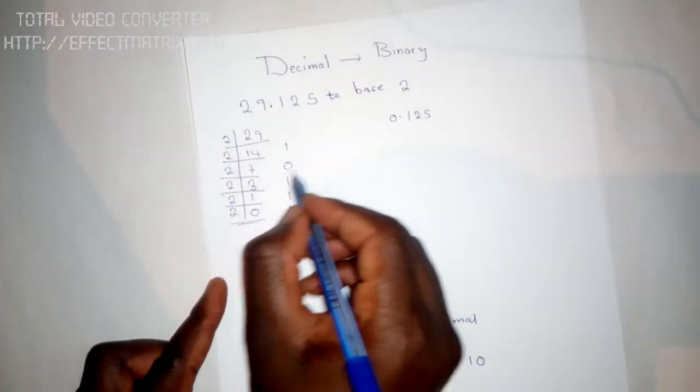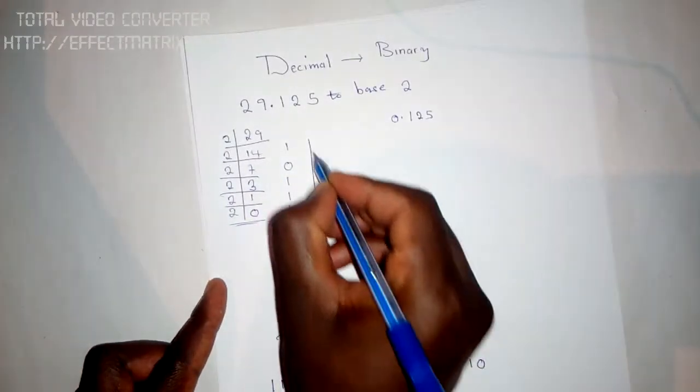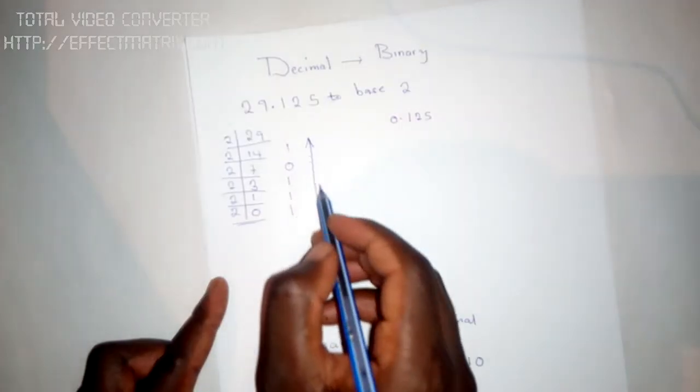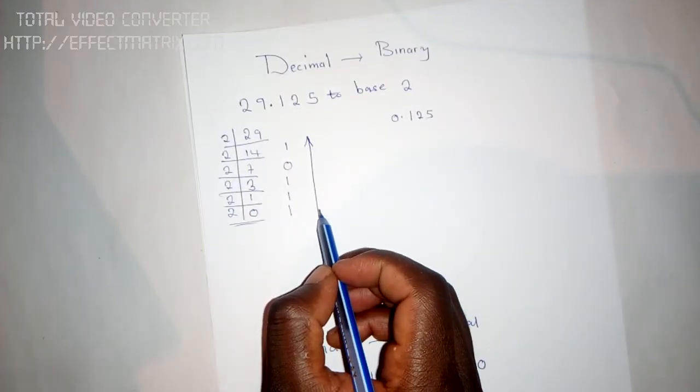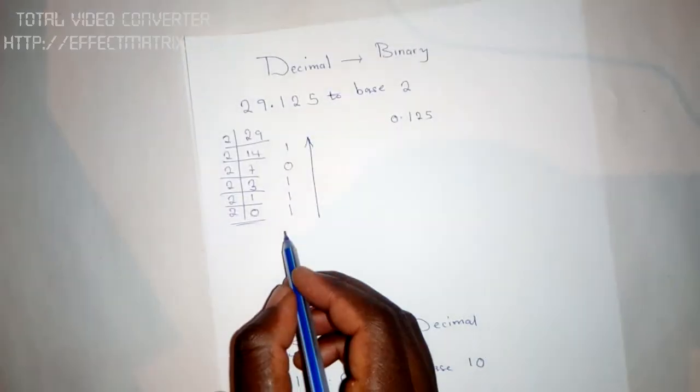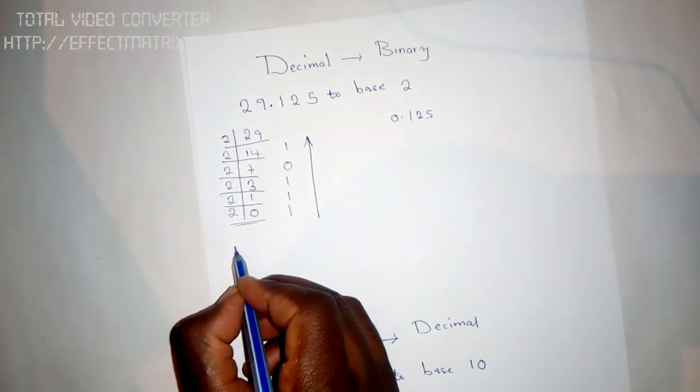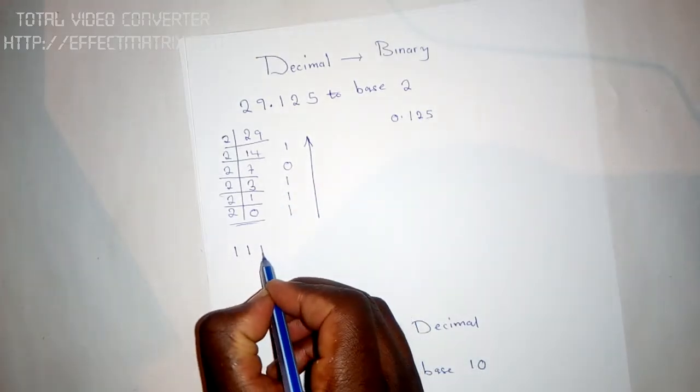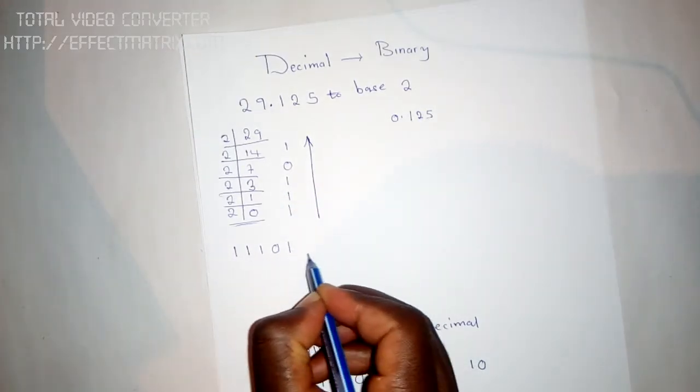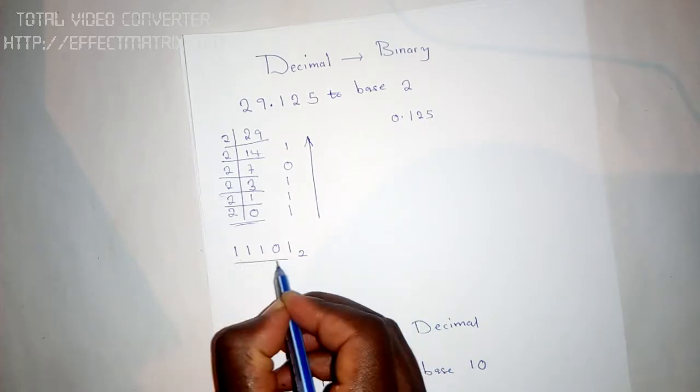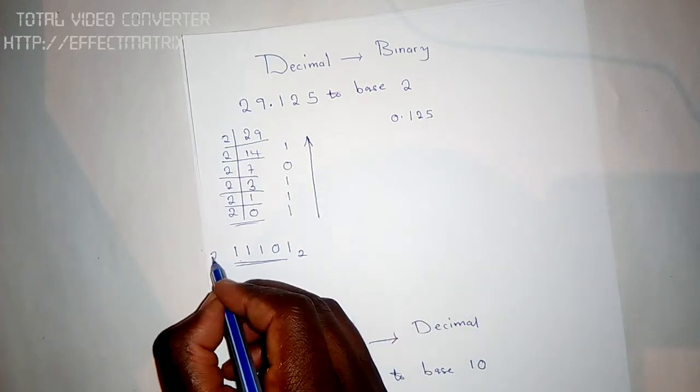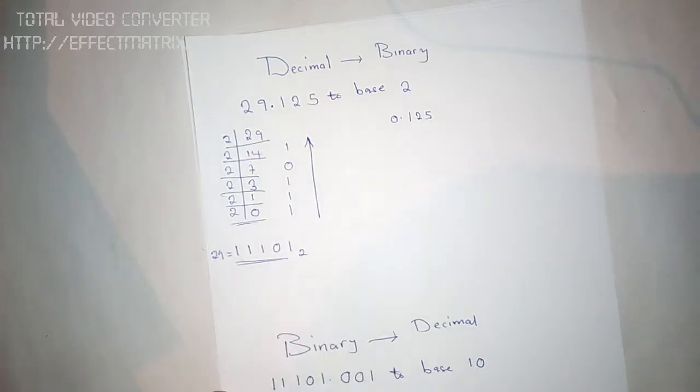When you do this, you get these numbers. The arrow is pointing upwards, so you get these numbers from bottom to top. This is your base 2 for 29 - just for 29. So 29 is equal to this.